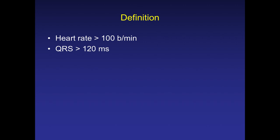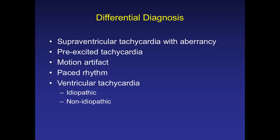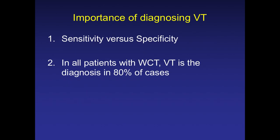There is a component called tachycardia — heart rate more than 100 — and the QRS is also wide, more than 120 milliseconds. Coming to the differential diagnosis, it can be of different etiologies: SVT with aberrancy, supraventricular tachycardias due to aberrant conduction, pre-excited tachycardia, motion artifacts, paced rhythms, and one of the common life-threatening arrhythmias — ventricular tachycardia.